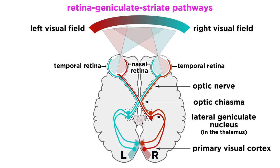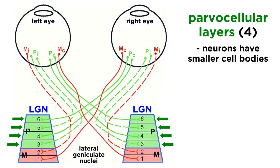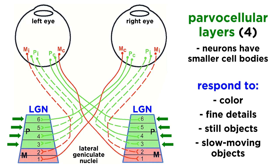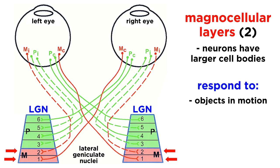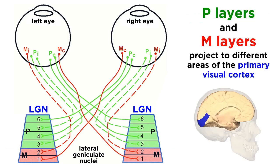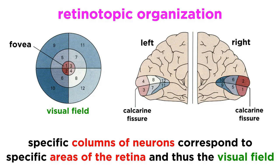Within these pathways, we can identify a few layers of neurons. There are parvocellular layers, also called P layers, comprised of neurons with smaller cell bodies; these respond to color, fine details, and objects that are still or moving slowly. Then there are magnocellular layers, or M layers, comprised of neurons with larger cell bodies, which are more responsive to objects in motion. These layers project to different areas of the visual cortex. Another aspect of organization is the identification of vertical columns perpendicular to the cortical layers, each corresponding to a specific area of the retina from a particular eye.